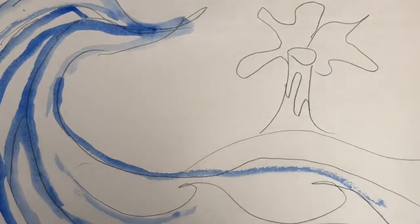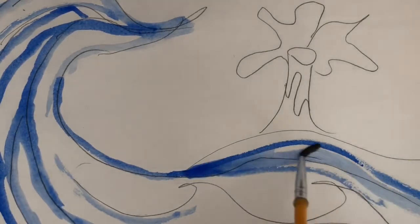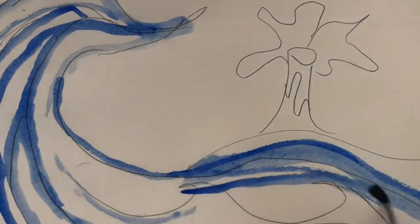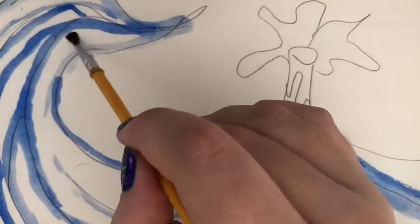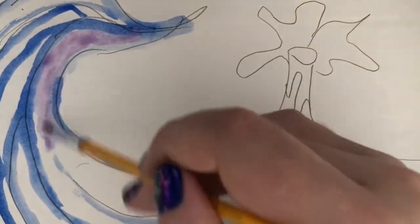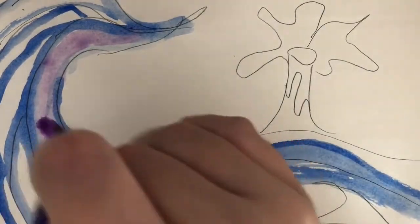Now one thing I can even do here is I can add more colors into my water. So if I don't want it to just be blue, what if I add some purple or some green? That way I can make my water be a lot more colorful, especially since it's the main part of our art.